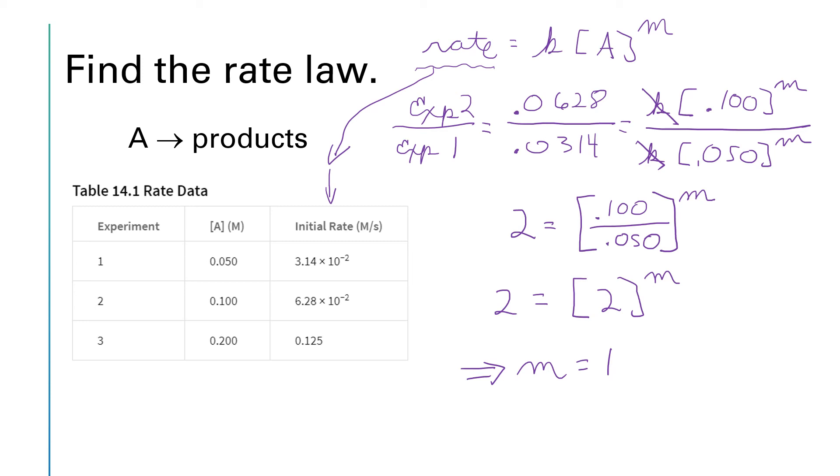What's left is finding k. Well, if I rewrite my rate law with knowing what I know so far—I'm going to do this in the upper left—I've got the rate is equal to k times A raised to the first power, or just k times A. I can rearrange this equation to get an expression for k. I'm going to bring that down to the bottom where I've got a little bit more room to write. If I divide both sides of this equation by A, I'm left with k is equal to the rate divided by the concentration of A.